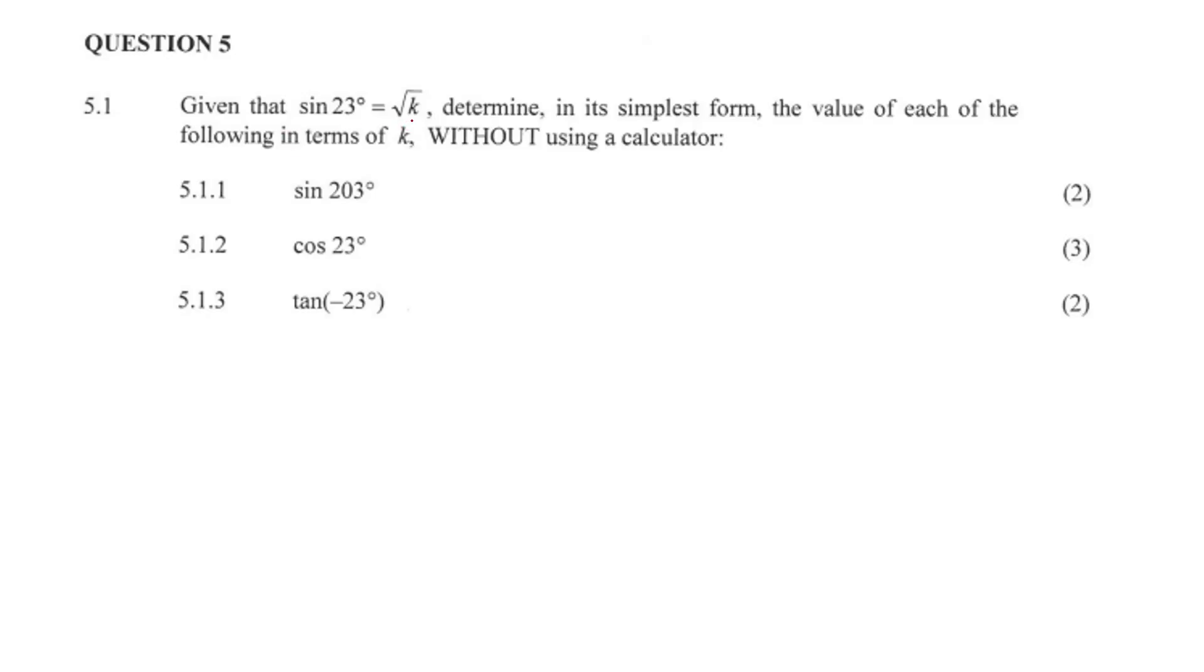Question 5.1, we're given that sine 23 is equal to root K. So if we have a look at our CAST diagram - C, A, S, T - you'll notice that 203 degrees is definitely going to be in our third quadrant.